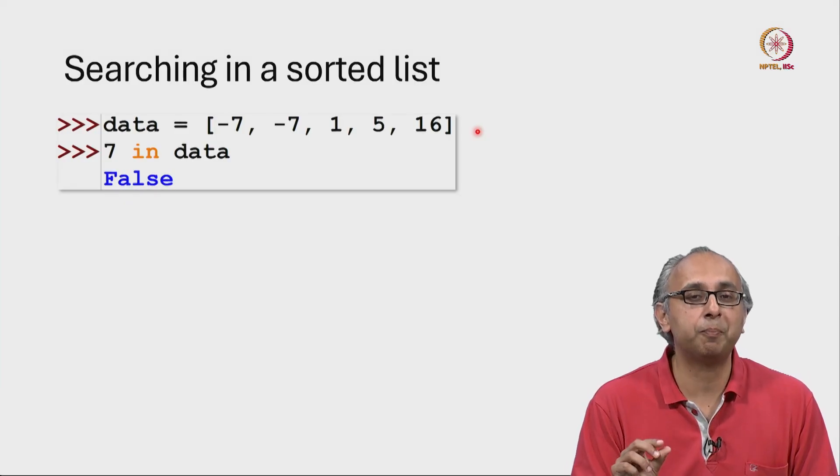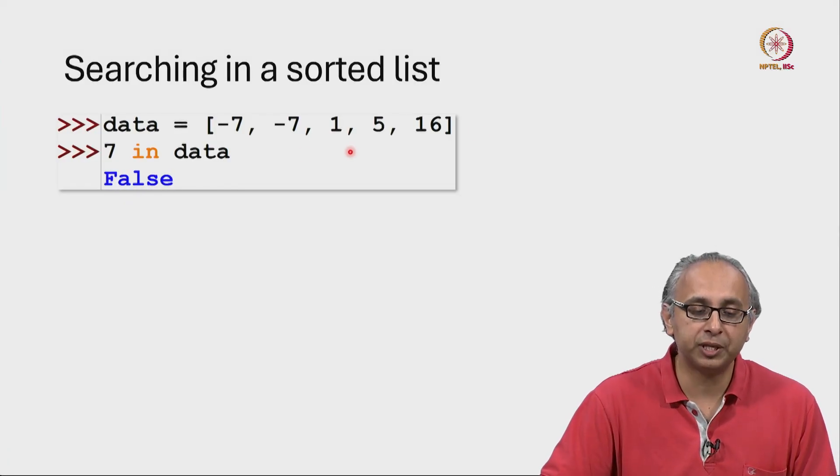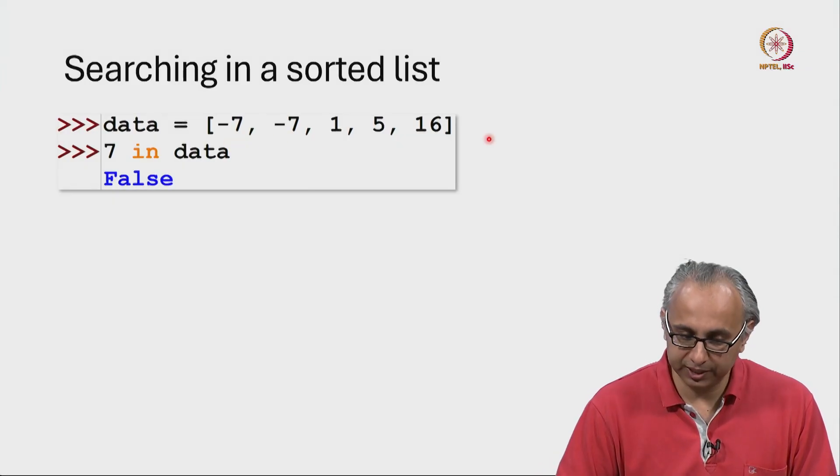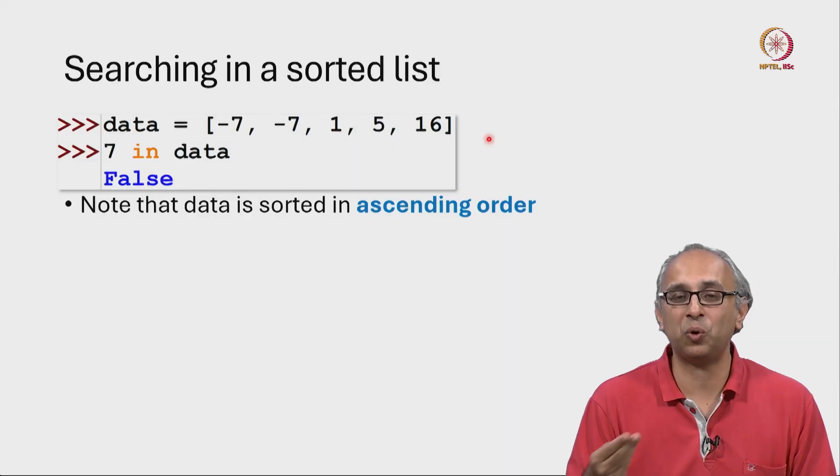Now, we could improve upon linear search if we know that the list is in fact sorted. So in this case, the data is sorted in ascending order.